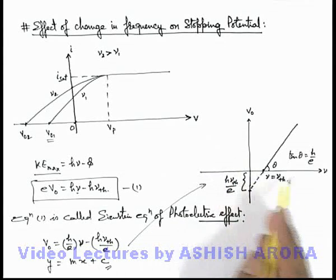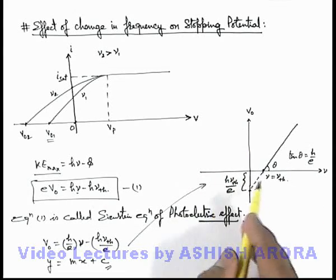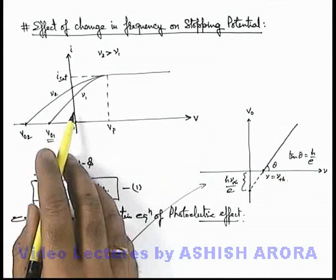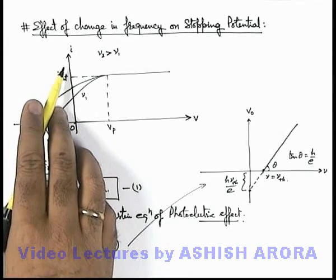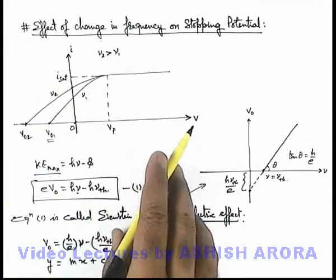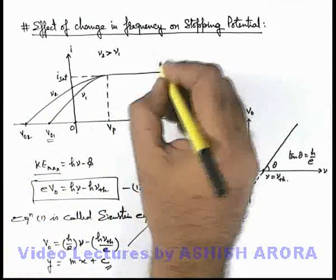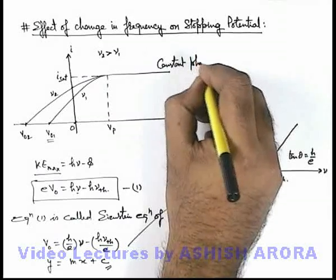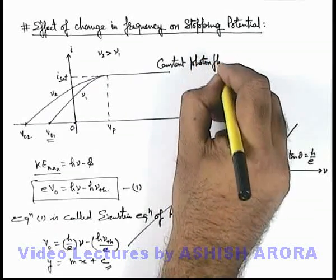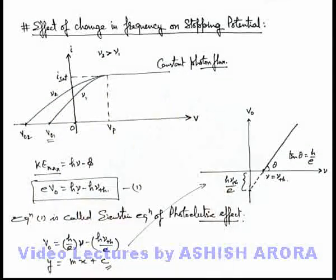So this is the curve which gives us the idea about variation of stopping potential with frequency, which is a straight line. And this is the curve which gives us the variation of current in the discharge tube experiment with varying voltage for different frequencies, keeping constant photon flux here. Photon flux is constant where total number of photons incident are not changing, so the current will also remain same.